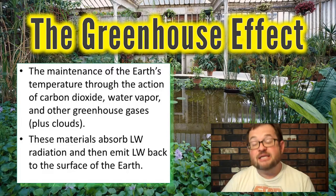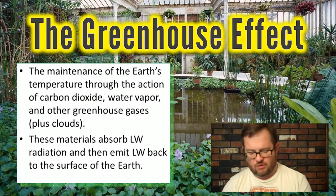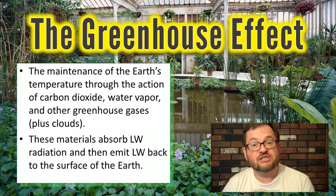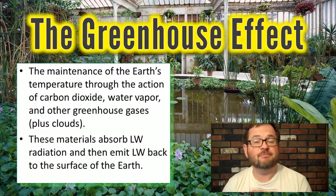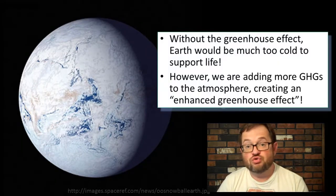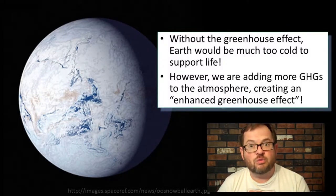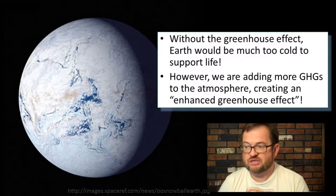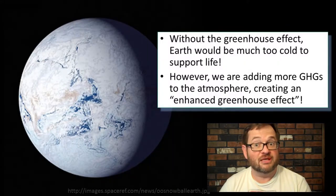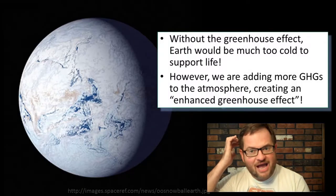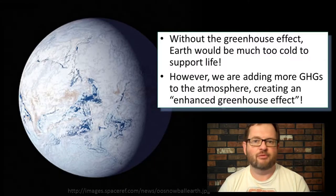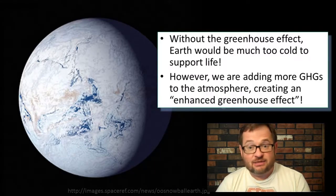The greenhouse effect is the maintenance of Earth's temperature through the action of carbon dioxide, water vapor, and other greenhouse gases and clouds. These gases are necessary to maintain the temperature of the Earth. The greenhouse effect is a perfectly natural part of the Earth's climate system. Without it, Earth would be much too cold to support life — the entire Earth would be a frozen ball of ice, because we are simply too far from the sun to receive enough radiation for there to be liquid water.